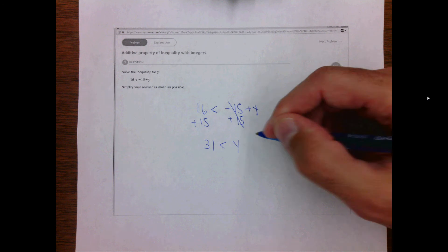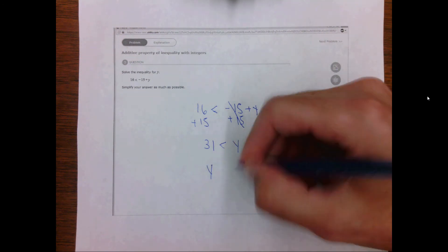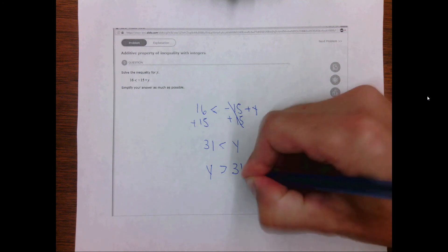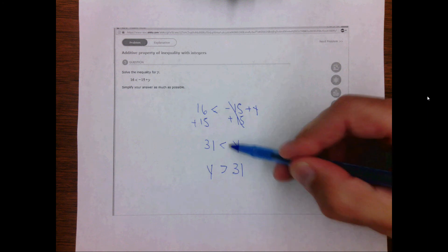One major difference is if I want to write y on the left-hand side I have to put y is greater than 31. Notice when I switch the side of y I also have to switch the inequality.